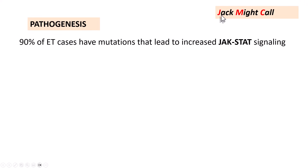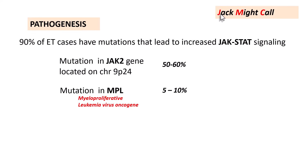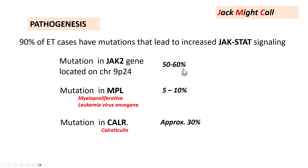Try to remember this mnemonic — JAK-MC: J for JAK-2 mutation, M for MPL mutation, and C for CALR mutation. JAK-2 gene mutations are seen in around 50 to 60% of cases. MPL, which stands for myeloproliferative leukemia virus oncogene, is mutated in around 5 to 10% of cases, whereas CALR (calreticulin) mutation is seen in approximately 30% of cases.